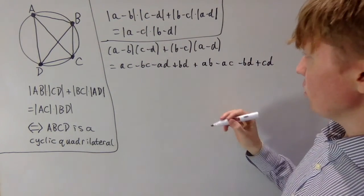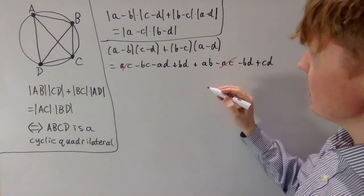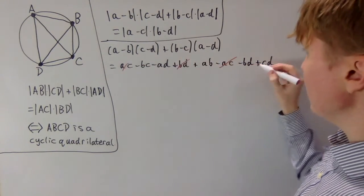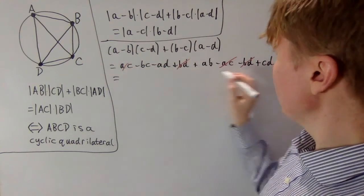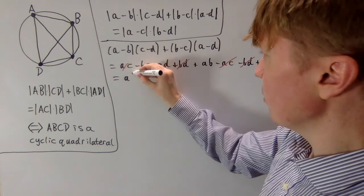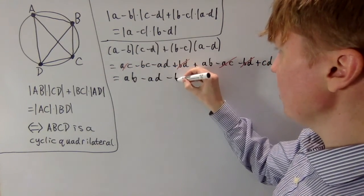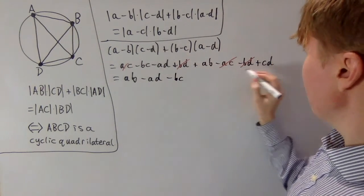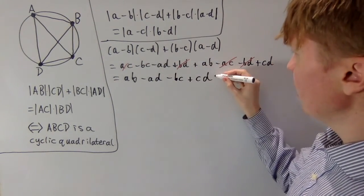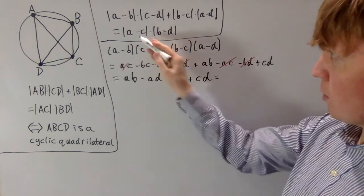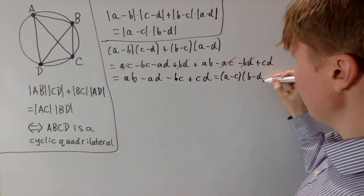Several terms cancel: ac cancels with −ac, and +bd cancels with −bd. So all we're left with, written in a sensible order, is ab − ad − bc + cd. And this is exactly what you get when you expand (a − c)(b − d). So without the modulus signs, this identity is always satisfied by any complex numbers, just by expanding the brackets.